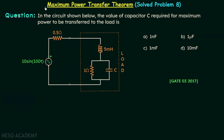We are going to solve problem number 8 on the maximum power transfer theorem. This problem is based on maximum power transfer in an AC circuit. The problem asks: in the circuit shown below, what is the value of capacitor C required for maximum power to be transferred to the load?